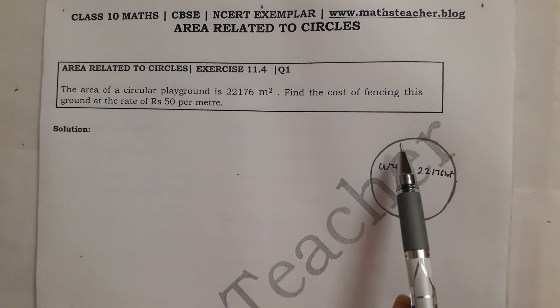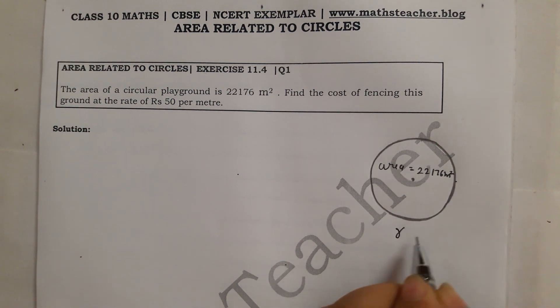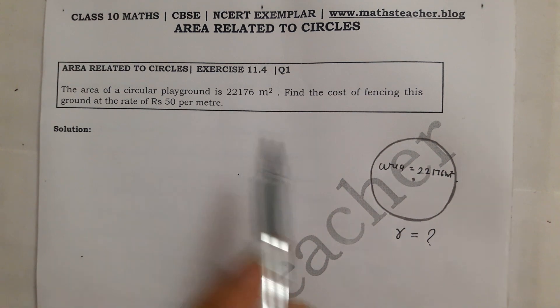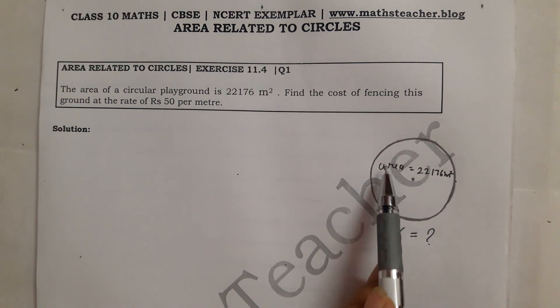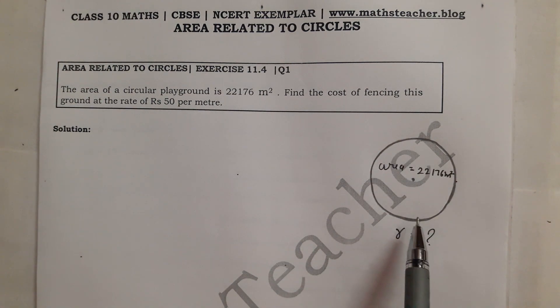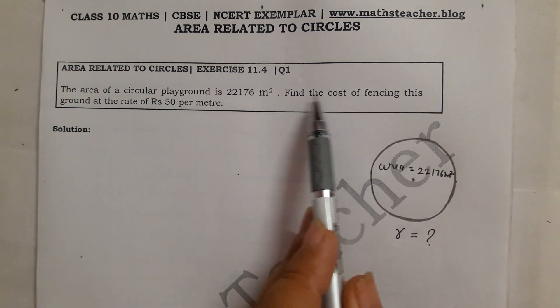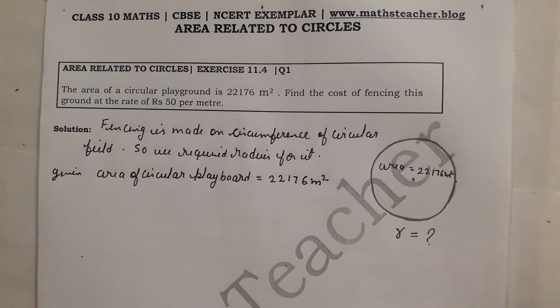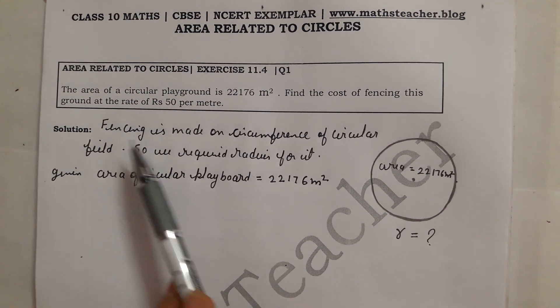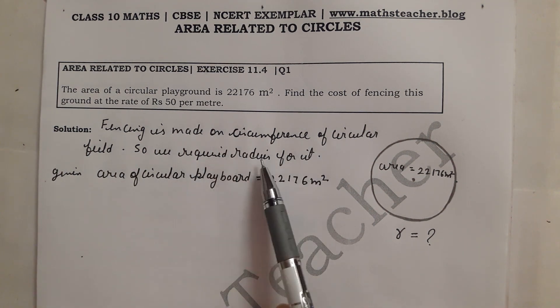So first from this area we try to find the circumference, which is the border. We also call it the perimeter or circumference. First from this area we should know the radius. We have the area, so with that we will find the radius. Then from the radius we will find the circumference, and multiply it by 50. Given - fencing is made on circumference of circular field, so we require radius.